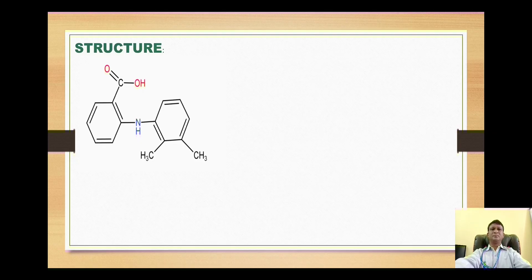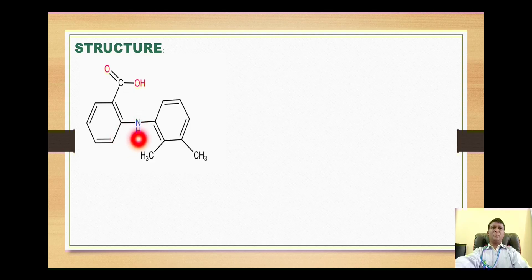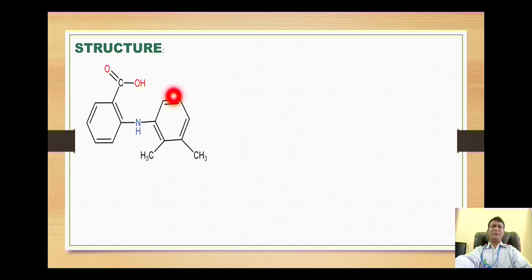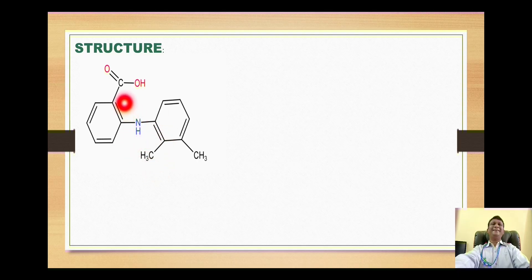Let's look at the structure of this compound. You can find the presence of a COOH group, that is carboxylic acid, and there is presence of an amino group on a phenyl ring with two methyl groups. If you look at the name mefenamic acid, you can guess the presence of these particular structural features. The 'mef' part stands for presence of methyl and phenyl, the 'am' stands for presence of an amino group.